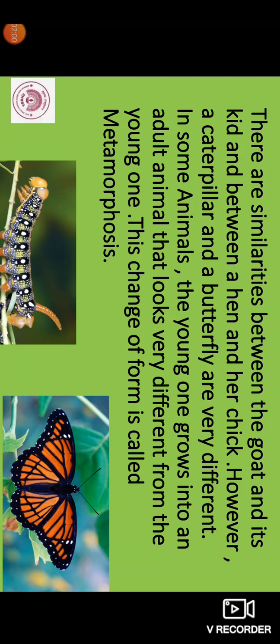Students, you would be aware that there are similarities between the goat and the kids and between a hen and her chick. However, a caterpillar and a butterfly are very different. In some animals, the young one grows into an adult animal that looks very different from the young one. This change of form is called metamorphosis.